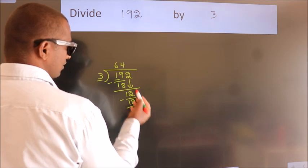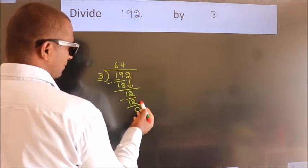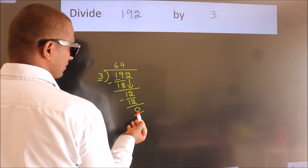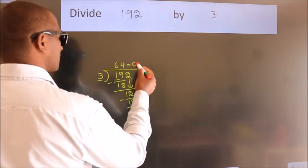After this, no more numbers to bring down. And we got remainder 0. So this is our quotient.